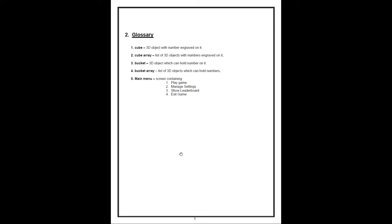The next section is the glossary of terms used in the subsequent document. There are 5 important terms: cube — a 3D object with a number engraved on it; cube array — a list of 3D objects with numbers engraved on each; bucket — a 3D object which can hold numbers on it; bucket array — a list of buckets or 3D objects which can hold numbers; and main menu — the screen containing options: play game, manage setting, show leaderboard, and exit game.